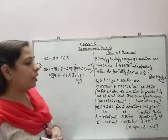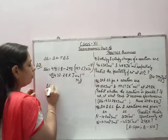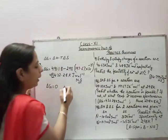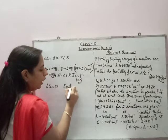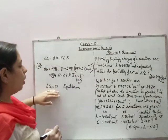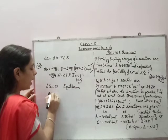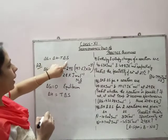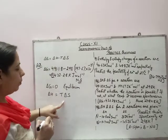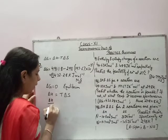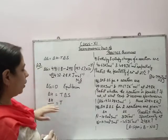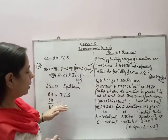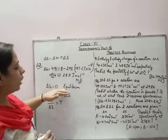Now, we know the reaction is non-spontaneous. If delta G is zero, the system is at equilibrium. When delta G equals zero, the expression delta H minus T delta S equals zero, which means delta H equals T delta S. Therefore, delta H divided by delta S gives us the value of temperature. By substituting the values of delta H and delta S, we can find at what temperature the reaction will be at equilibrium, because at equilibrium delta G equals zero.